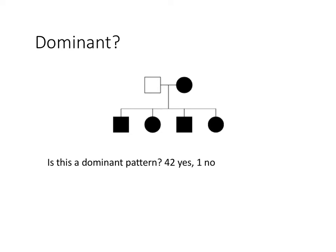It's dominant because the disease — filled-in symbols, whatever phenotype — shows up in every generation. That tends to be a dominant sort of pattern. If this is dominant, what's the genotype of the affected parent?